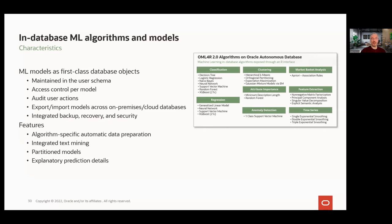What are some other characteristics of in-database machine learning algorithms and models? Resulting models are first-class objects in the database, stored and managed in the user schema. You can control access by granting and revoking permissions, audit user actions, and export and import machine learning models across databases, which can cross the cloud and on-premises boundary. On the right, we're showing the set of machine learning techniques and corresponding algorithms exposed through an R interface. These algorithms benefit from algorithm-specific automatic data preparation, where required transformations can be automatically determined, applied, and maintained with the model, as well as explanatory prediction details, where each score can include the top factors that most contribute to each individual prediction.